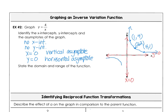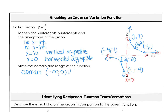We're going to pull the graph away from the origin. That point would be (negative 2, negative 2). We would substitute negative 1 and get y equals negative 4. Substituting negative 4 gives y equals negative 1. The domain for the function is the same as the parent: negative infinity to 0, and then 0 to infinity.